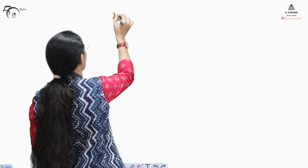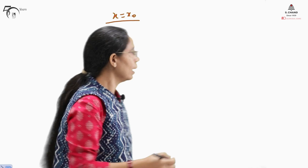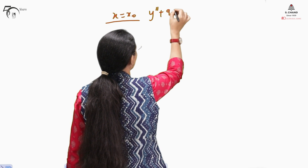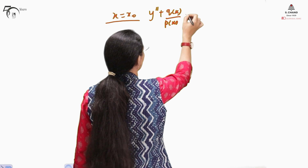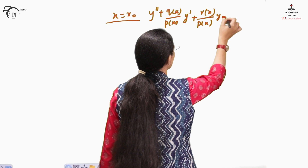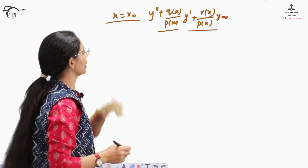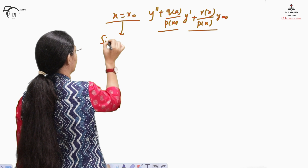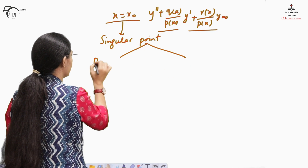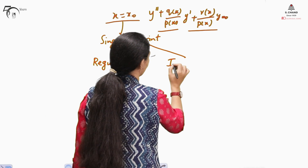If x equals to x-naught is not an ordinary point, then it is called a singular point. That is, if the form of the differential equation is y double dash plus q(x)/p(x) y dash plus r(x)/p(x) y equals zero, and if q(x)/p(x) and r(x)/p(x) are not analytic at x equals x-naught, then it is called a singular point. There will be two possibilities: a regular singular point and an irregular singular point.